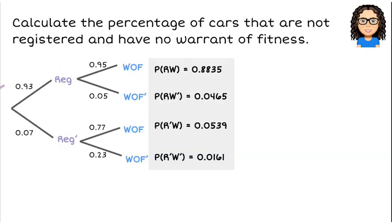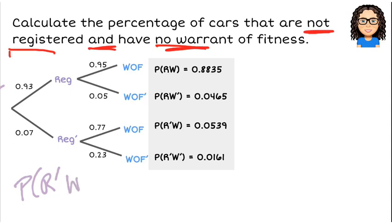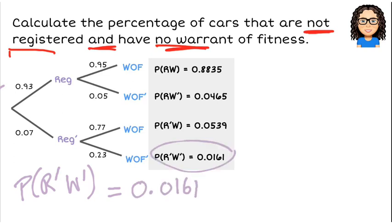Question one: calculate the percentage of cars that are not registered and have no warrant of fitness. We want the probability of not registered and not warranted, which we can read straight off the diagram: 0.0161. Since it asks for a percentage, we multiply by 100 to get 1.61%.